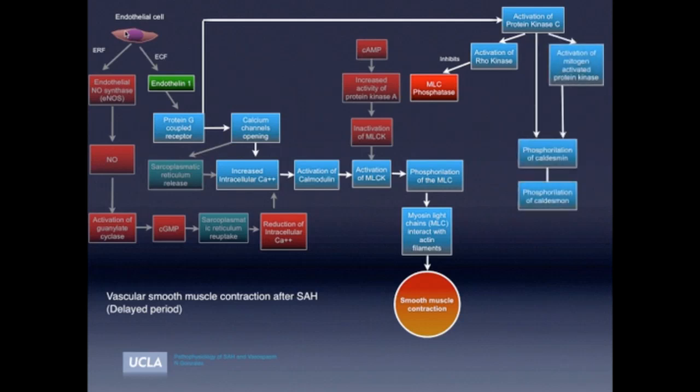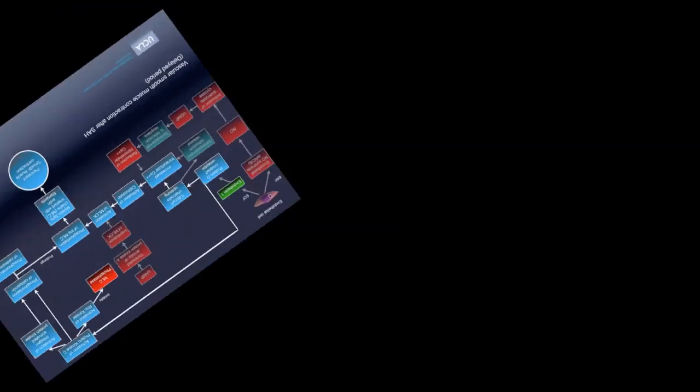In addition, the protein kinase C is going to activate the mitogen-activated protein kinase, and by way of this activation and by direct effect, is going to induce phosphorylation of caldesmin and caldesmon, both of which prolong the phosphorylation of the myosin light chain, inducing persistent smooth muscle contraction.